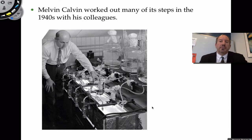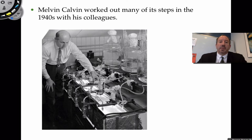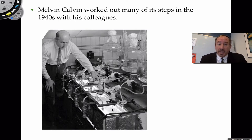A shout out for Melvin Calvin and his colleagues at the University of California. How did they discover this pathway? Rather cleverly — they were growing algal cells in aquaria with a lot of tubing, because Professor Calvin was introducing carbon dioxide bubbling into these aquaria. He also had a light bank because you need light to discover the dark reaction of photosynthesis.